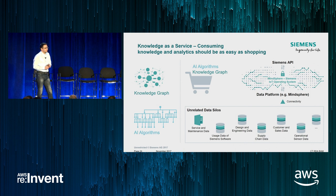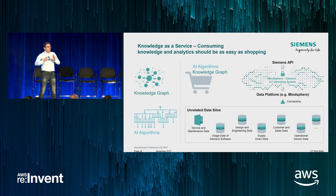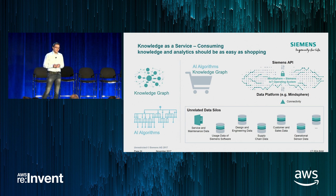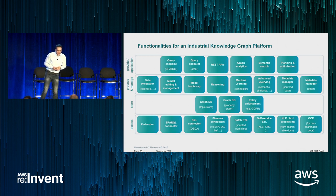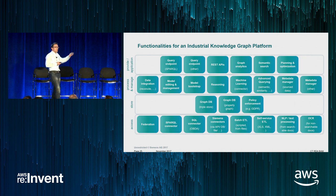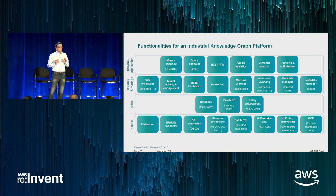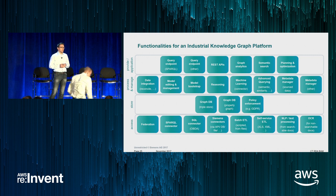Linking this to the big vision: we have the knowledge graph part and the learning part on top. MindSphere was mentioned in Andy Jassy's keynote — the idea for MindSphere is to make it easy to access data and AI algorithms. It's not only about storing a graph; there's really plenty of stuff you need around that. Peter will now guide you through some of those functionalities.